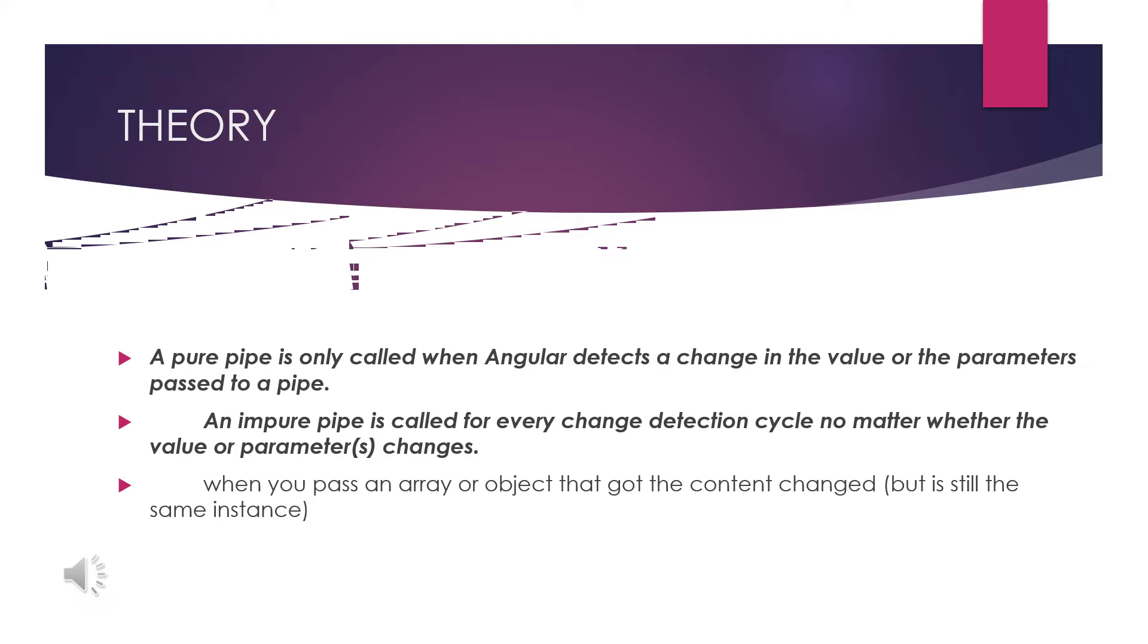But an impure pipe doesn't consider that - it just processes whatever input is given at that time. It will not do any reconsideration or re-changing of the values. That's the difference between them.